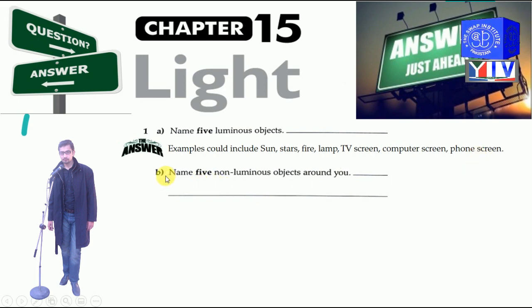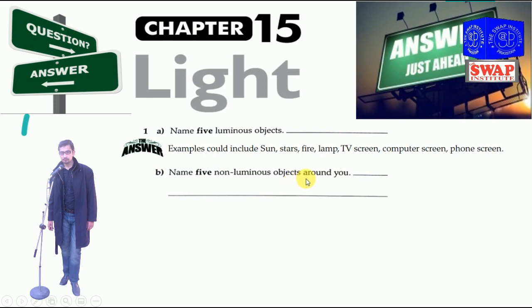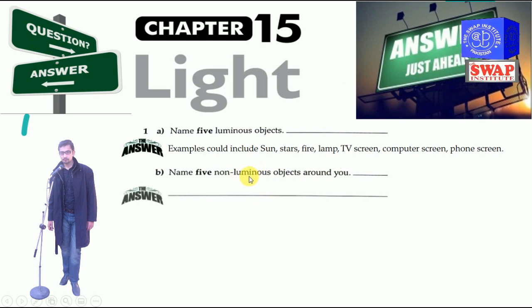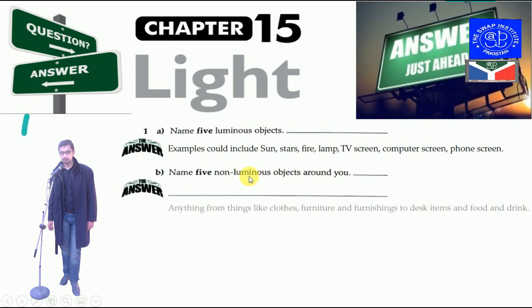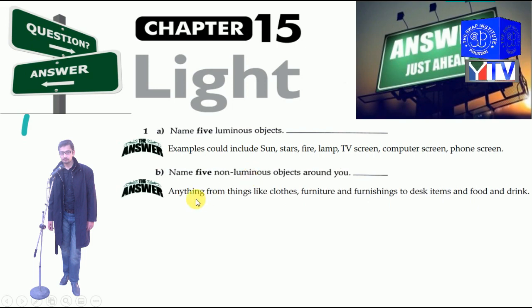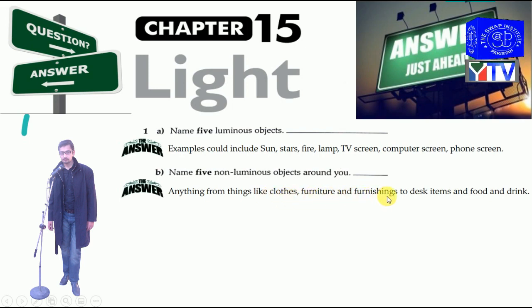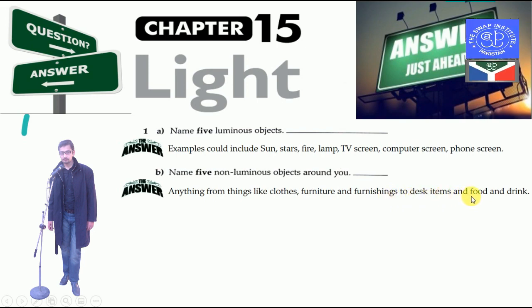The B part: name five non-luminous objects around you — those objects which do not emit light. The answer will be anything from things like clothes, furniture, furnishings, desk items, and food and drinks, etc.